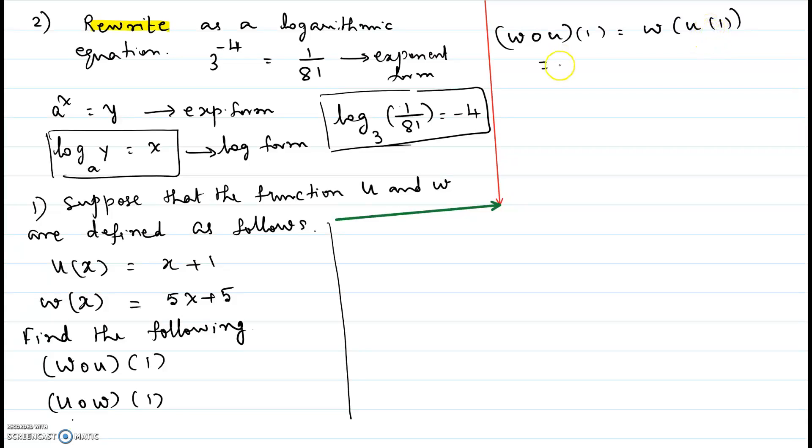So first we have to do the inside of the function. So we will keep the outside as this and then we will evaluate u at 1. So we have to take the u function which is given to be x plus 1 and then we will plug in 1 in the place of x.